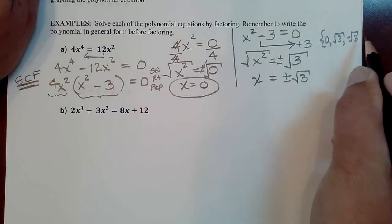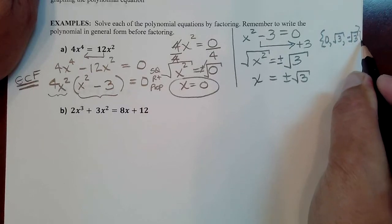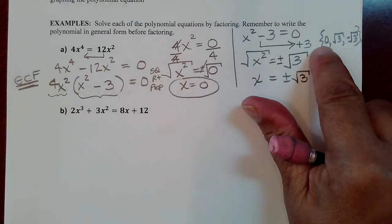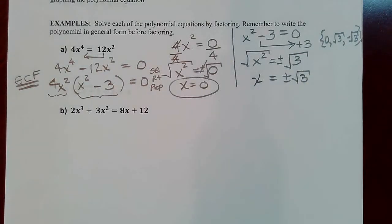I don't know that MyMathLab will be fussy, but if they are, put them in descending order. With the smallest one first, which would be the negative, then the zero, then the square root of 3, if they want you to put them in order.